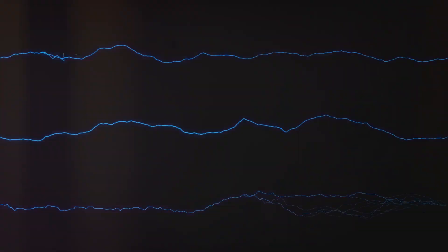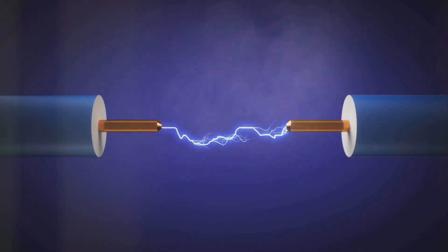In order to understand this phenomenon, one must first understand the basics of electricity. Electricity is essentially the movement of electrons from one place to another. In some materials, like metals, electrons are free to move around, which is why metals conduct electricity well.